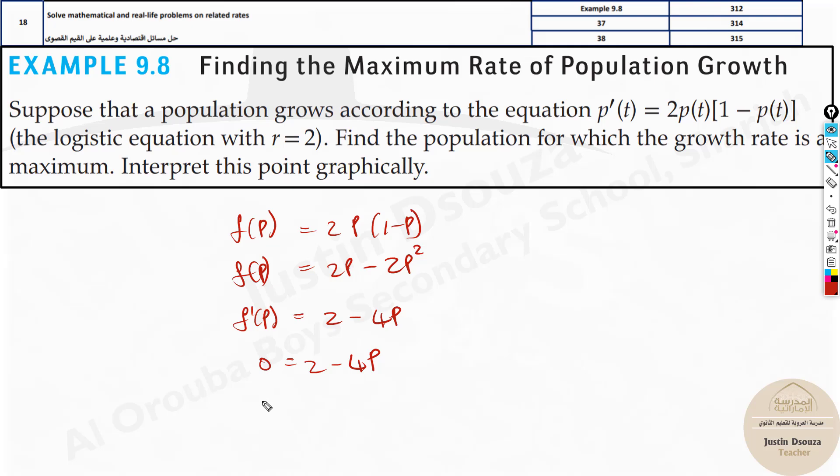This is the point. We can just take it to the other side, 4p equals 2, so p is equal to 2 by 4, that is half. At p equals half, at this particular point, it is maximum.